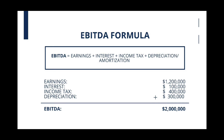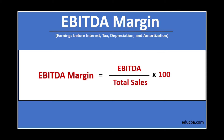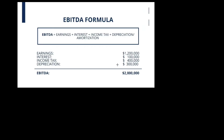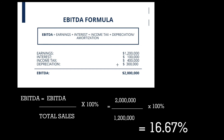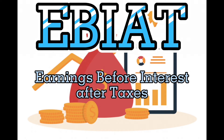So if EBIT is earnings before interest and taxes, dito naman sa EBITDA kasama na yung depreciation and amortization. The EBITDA calculation sums the net income, interest, taxes, depreciation, and amortization. So dito, given na yung earnings and the EBITDA, so i-substitute na lang natin. The EBITDA, 2,000,000, divide by total sales or earnings, 1,200,000, times 100, is equals to 16.67%.